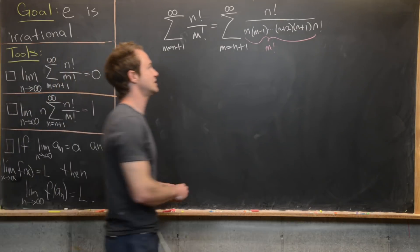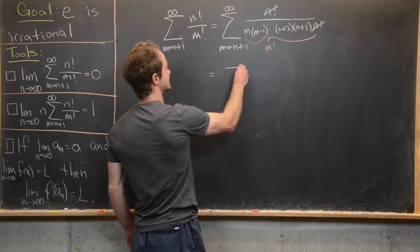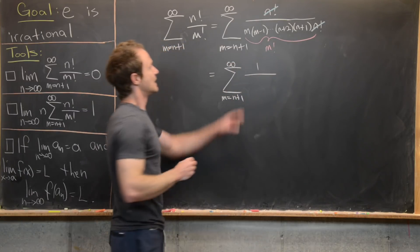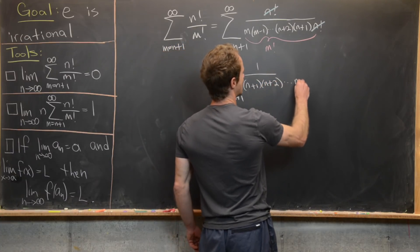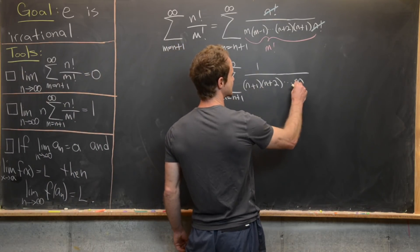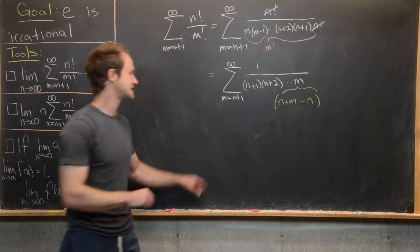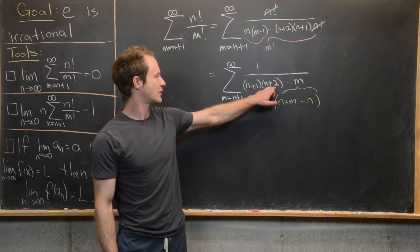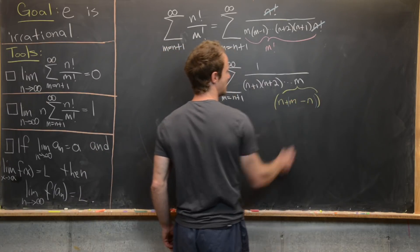Now I can do a little simplification: I can cancel the n factorial in the numerator with the n factorial in the denominator. That gives me the sum as m goes from n plus 1 to infinity of 1 over (n plus 1) times (n plus 2) all the way up to m, written as a rising product. The next thing I want to do is rewrite m as n plus (m minus n), so that every term in this product is of the form n plus something — n plus 1, n plus 2, all the way up to n plus (m minus n).